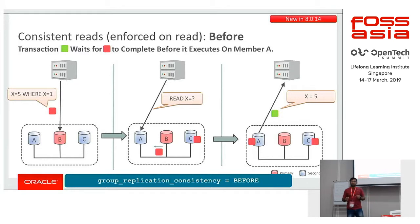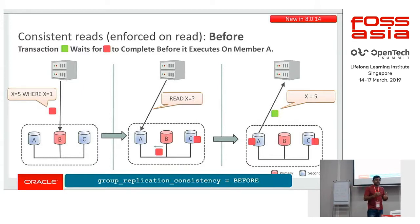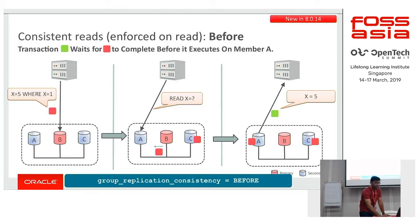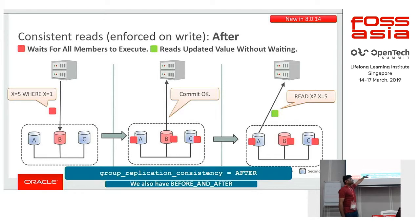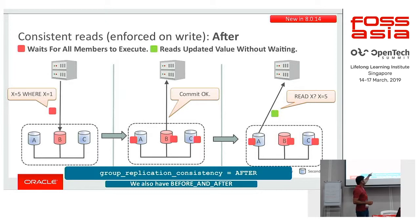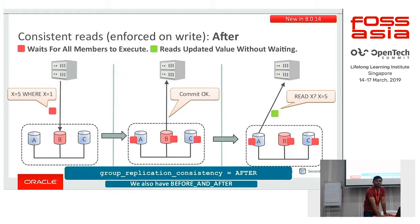We have enforced consistency levels. Enforced on read: if the value has been updated on B and someone queries from server A, the query will wait until it executes on A. This can be set through group_replication_consistency equals to BEFORE. Similarly, enforced on write: if I am writing something on server B, I want that the handler should not be returned to the client until it has executed on all members. So in server B, when executing a DML, until it is available on member A and member C, I will not get the commit acknowledgement. When the commit gets back to the client and we query, we will get value 5 across the group. We also have BEFORE_AND_AFTER consistency level.